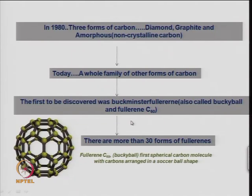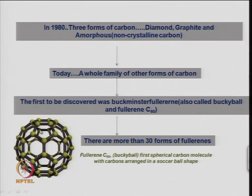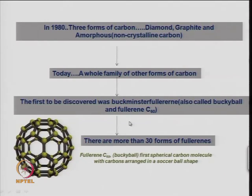Today there are many other carbon-based molecules related to this buckyball with large numbers of carbon atoms per molecule, and there are more than 30 forms of such fullerenes. It basically looks like a soccer ball which has 6-membered carbon rings and also 5-membered carbon rings. This typical molecule has 60 carbon atoms arranged like a soccer ball or football, and if you replace the vertices with carbon, this becomes a C60 molecule. This was discovered in 1985 and a Nobel Prize was given for this discovery.